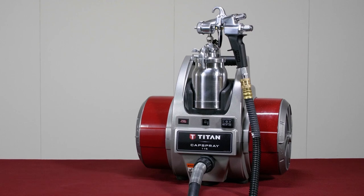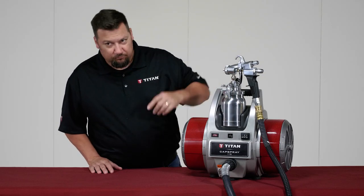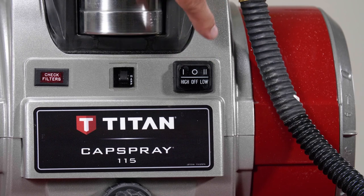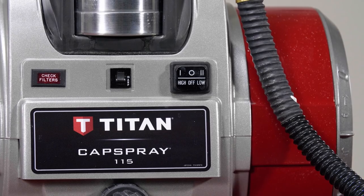The CapSpray 115 we're using as an example in this video has two levels of airflow, high and low. The low setting is for spraying thinner coatings, the high is for thicker coatings. All other units only have a single setting used for all coatings.